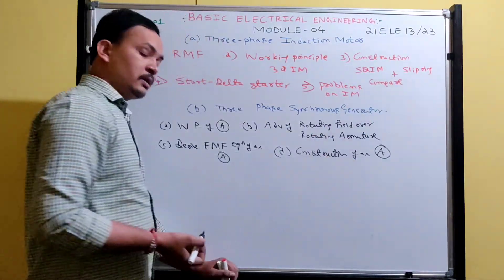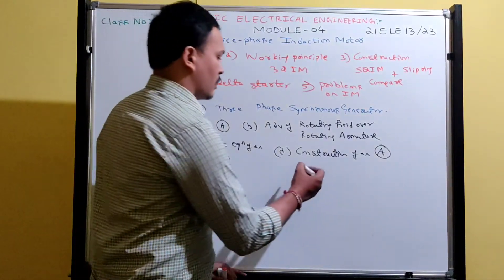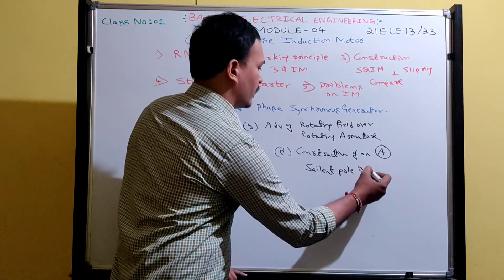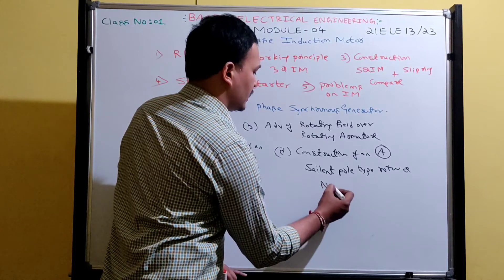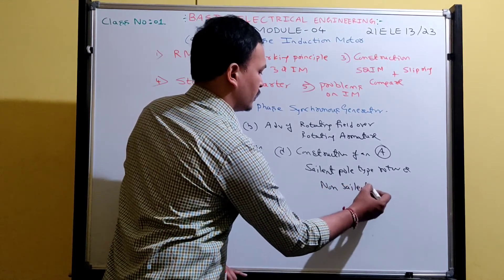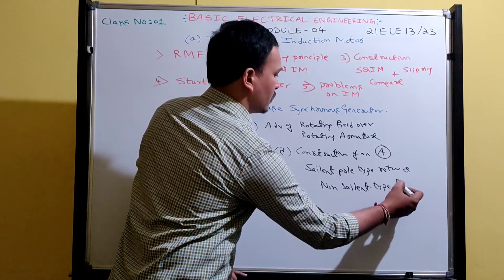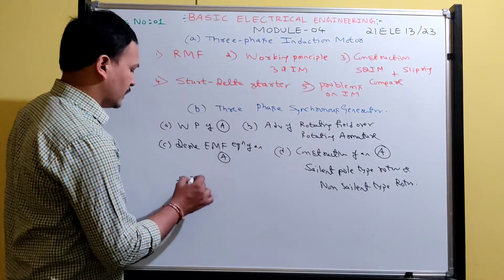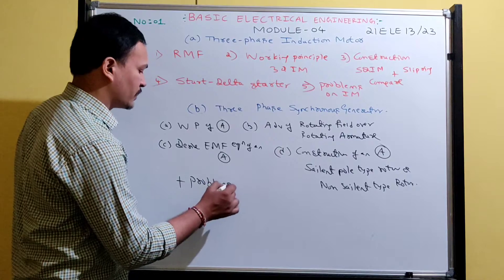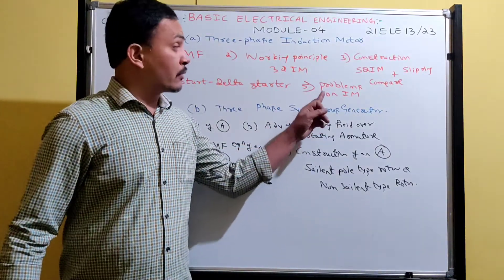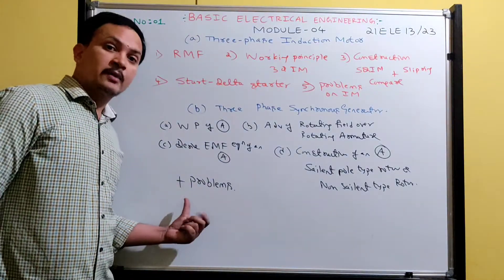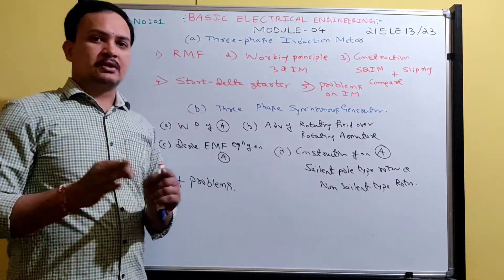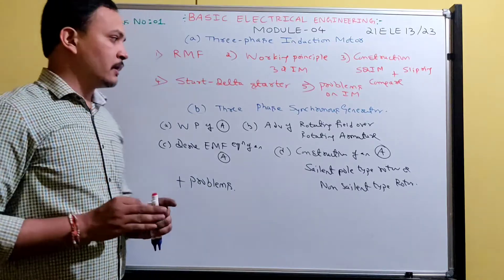For the rotor of an alternator, we have two types: one is called salient pole type rotor and the other is non-salient pole type rotor. These are very important topics. After that we are doing problems — I will be solving around 10 to 15 problems on induction motor and 8 to 10 problems on alternator.